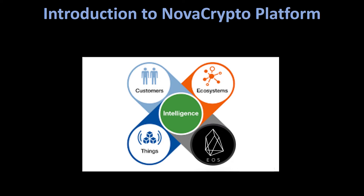The first component is the customer that will access the platform and use our applications that we develop. Our applications are separated between centralized and decentralized. What gives the availability to decentralize is the EOS blockchain that you see as a component in this schema. We will shift to the EOS blockchain all the transactions that we identify in the process of our applications.